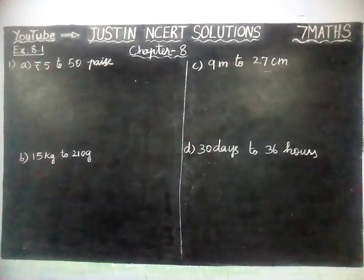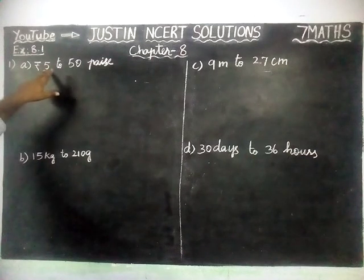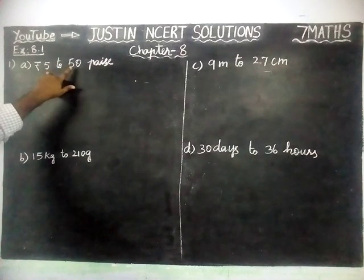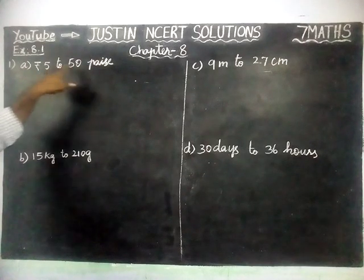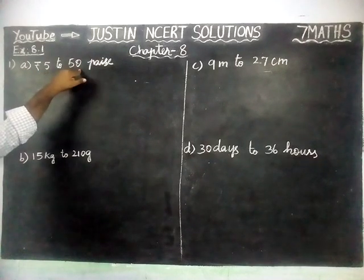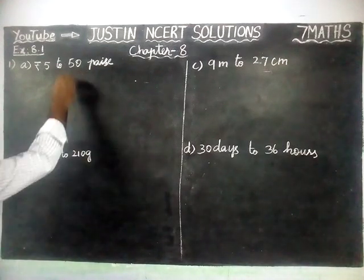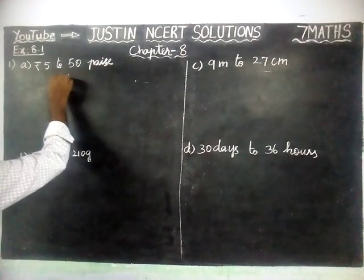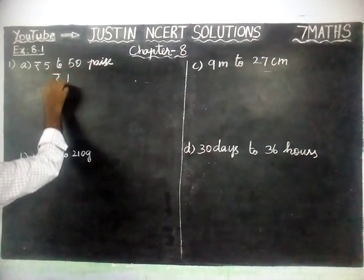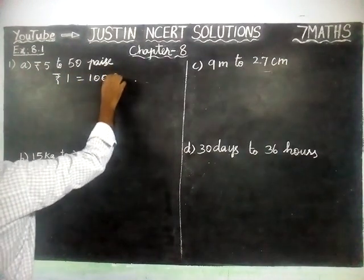In the introduction video, we saw that when we are comparing two quantities, they should be in the same units. Here, the first quantity is in rupees and the second quantity is in paise. So now we are going to convert into the same unit. We know that 1 rupee is equal to 100 paise.